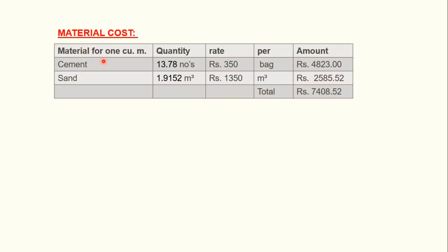To calculate material cost, prepare a simple table containing material, quantity, rate, unit, and amount. In the first column write the materials required for plastering — cement and sand. In the second column write the quantities: 13.78 bags of cement and 1.9152 cubic meters of sand.